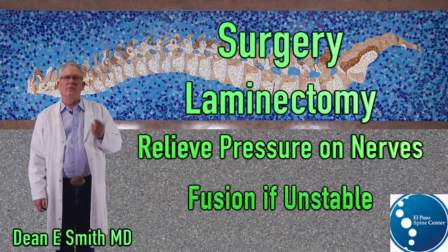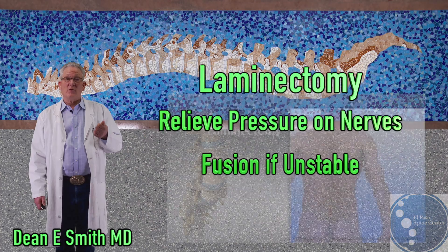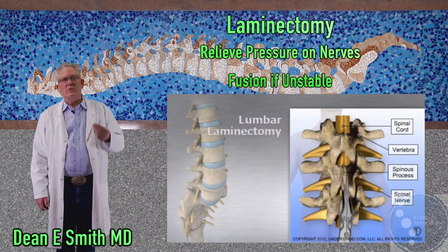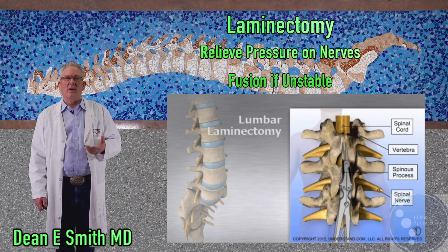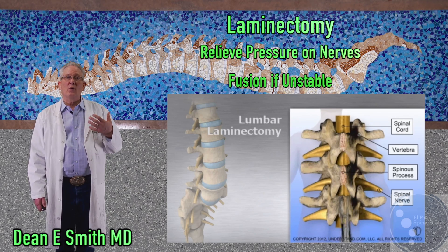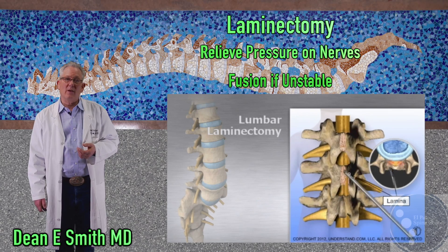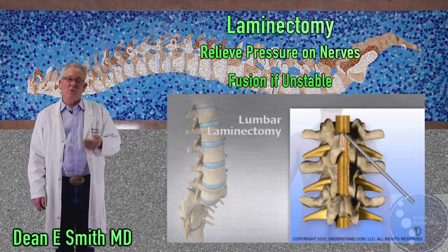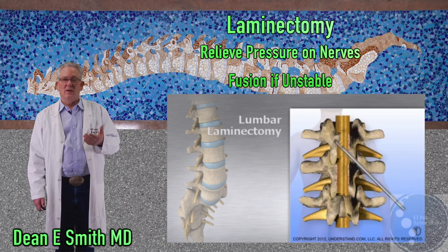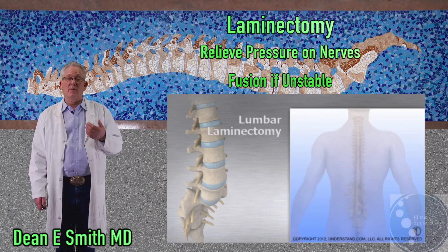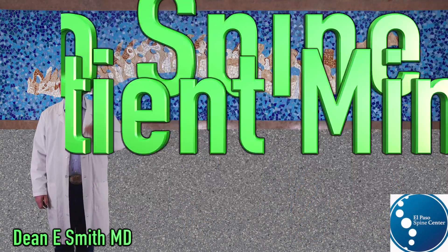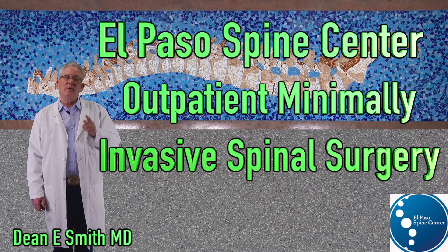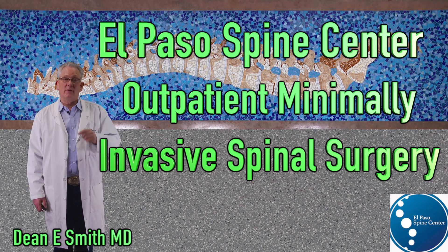If all conservative treatment options have failed, the patient should consider surgical intervention. The results with surgical treatment for lumbar spinal stenosis are excellent, and there are many newer minimally invasive treatment options available. The surgery involves removing bone and tissue to give the nerves more space — this is called a laminectomy. If there is instability, a spondylolisthesis, the patient may need a fusion. Here at the El Paso Spine Center, we specialize in minimally invasive surgery on the lumbar spine, including for the treatment of lumbar spinal stenosis.